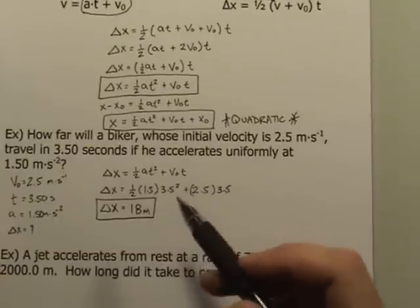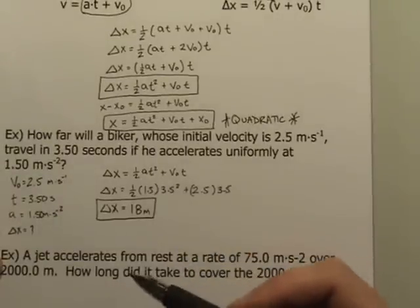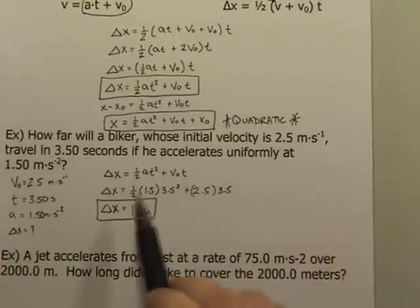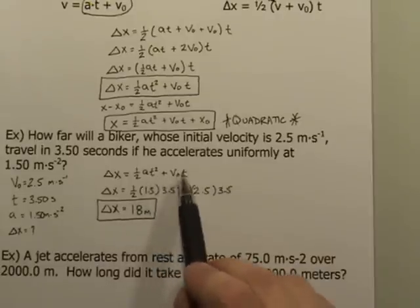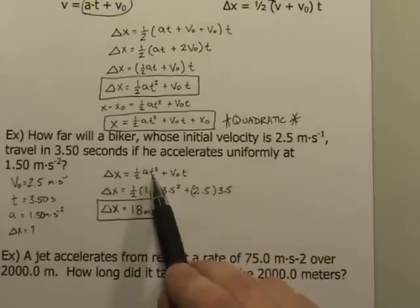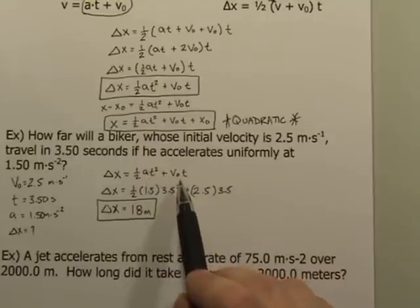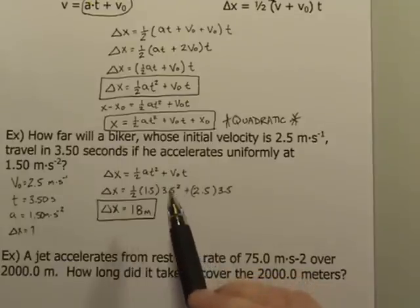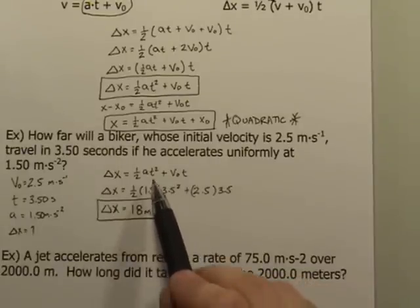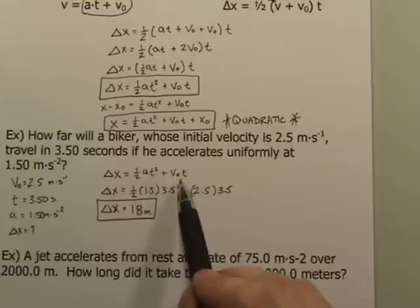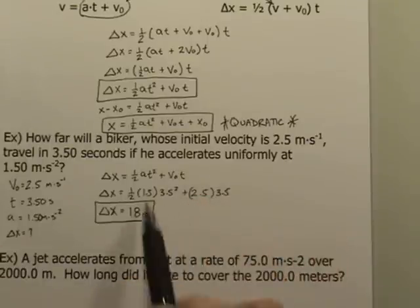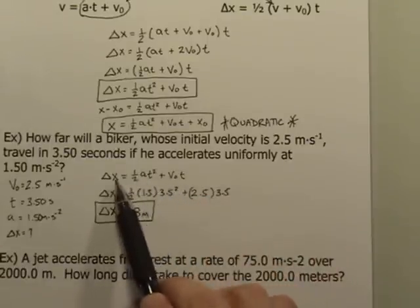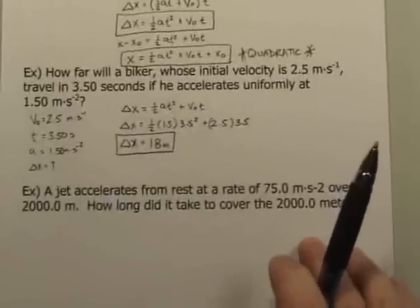Let's look at another example. This equation is frankly one of the most difficult to use because of that quadratic issue. If you're given the time, that's the best situation because t shows up both squared and unsquared, and that's where the dilemma lies. If you're not solving for t and t is given to you, that helps a lot. Since that's the easy version, let's look at two examples in which we solve for time — starting easy, then more challenging.